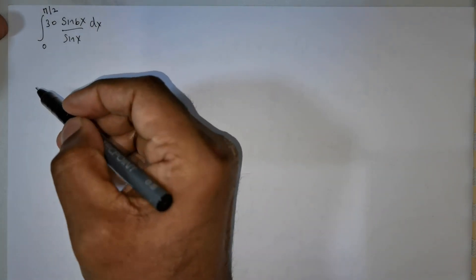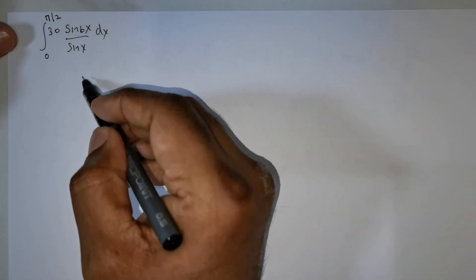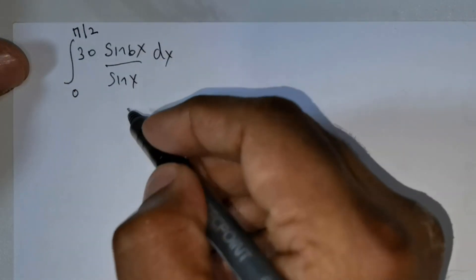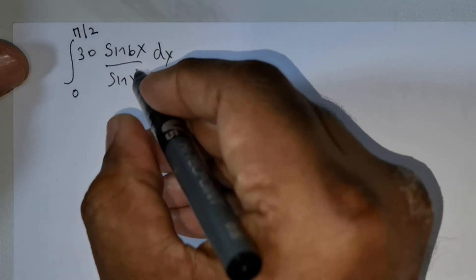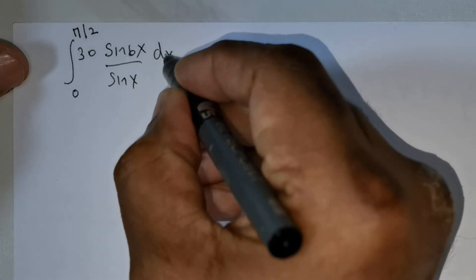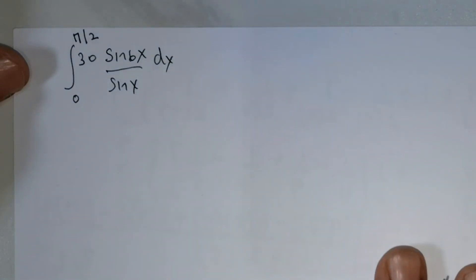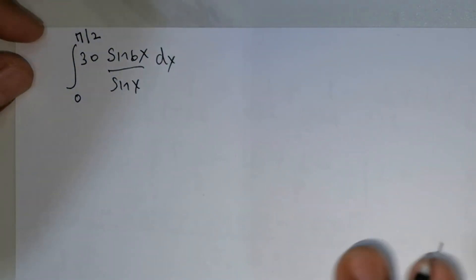Welcome everybody. We've been given this question: integral from 0 to pi over 2 of 30 times sin 6x divided by sin x, times dx. We are expected to integrate this.